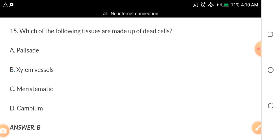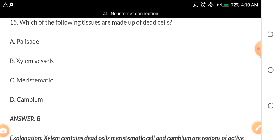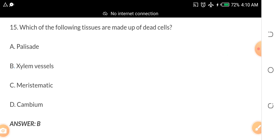So let's move on. Which of the following tissues are made up of dead cells? This was where we stopped in video part 5. A. Palisade B. Xylem Vessels C. Meristematic D. Cambium.